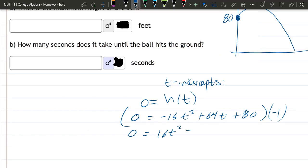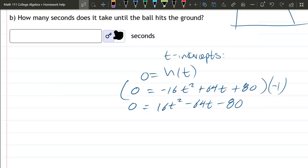16t squared minus 64t minus 80. I can factor some stuff out of here. I think I could factor a 4 out. Probably can factor more than a 4 out, but we'll start there.